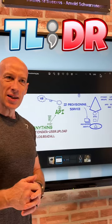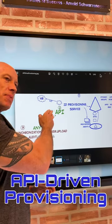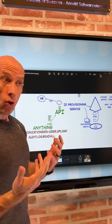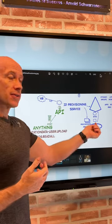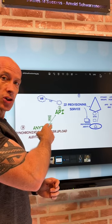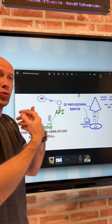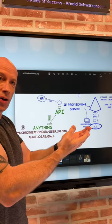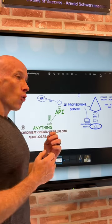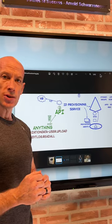In this too long didn't read, we're talking about the ability to have API driven provisioning to our Entra tenant or Active Directory Domain Services environment. Any application can post a SCIM payload that will then go through the provisioning service and provision those users in our Entra tenant or via Active Directory Domain Services using the provisioning agents.